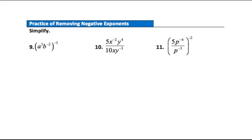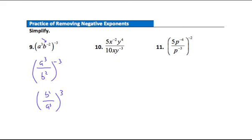Question 9: two sets of negative exponents. Start inside the parentheses — the b to the negative second goes to the denominator, leaving a to the third over b squared. Now deal with the negative 3 exponent on the outside by taking the reciprocal: b squared over a to the third, all to the positive third power. Apply the power-to-a-power rule: b squared raised to the third gives b to the sixth, and a to the third raised to the third gives a to the ninth. Final answer: b to the sixth over a to the ninth.